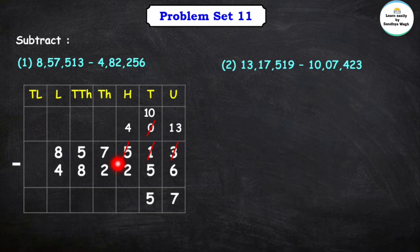Now let us subtract the hundreds place. 4 minus 2 is equal to 2. Moving to the thousands place: 7 minus 2 is equal to 5.